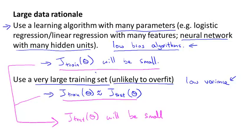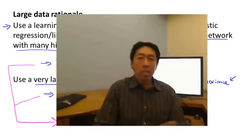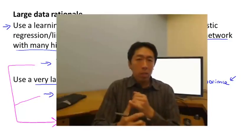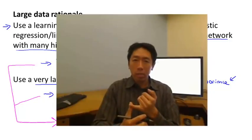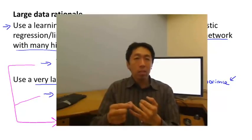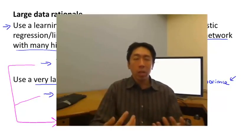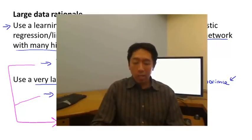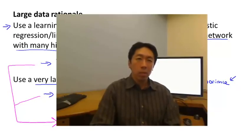So this gives us a set of conditions or hopefully some understanding of what's the sort of problem. Where if you have a lot of data and you train a learning algorithm with a lot of parameters, that might be a good way to give a high performance learning algorithm. And really, I think the key test that I often ask myself are, first, can a human expert look at the features x and confidently predict the value of y? Because that's sort of a certification that y can indeed be predicted accurately from the features x. And second, can we actually get a large training set and train a learning algorithm with a lot of parameters in the training set. And if you can do both, then that will often give you a very high performance learning algorithm.